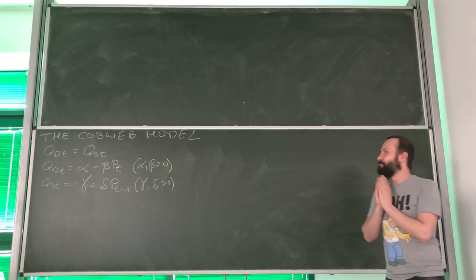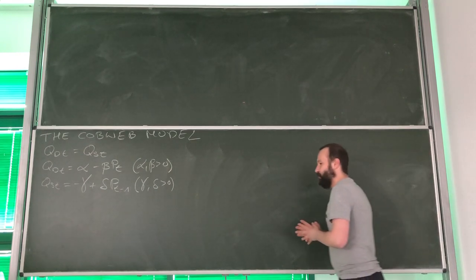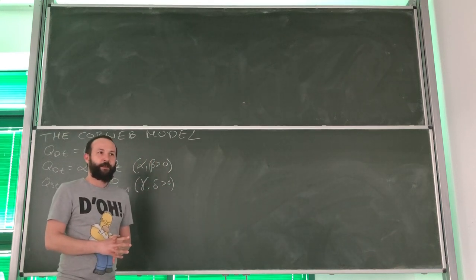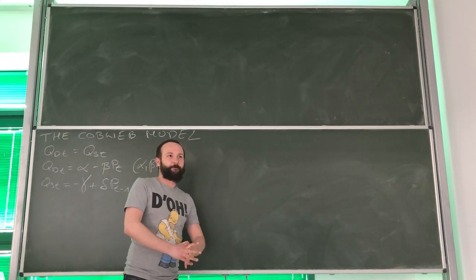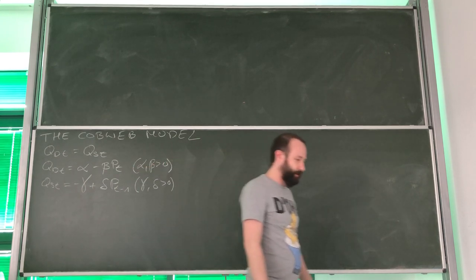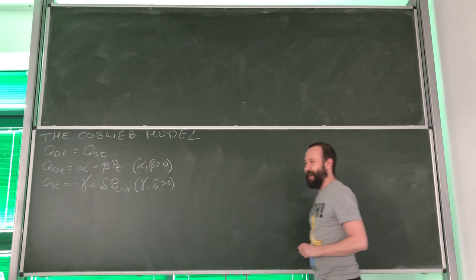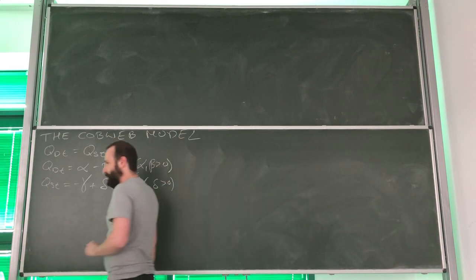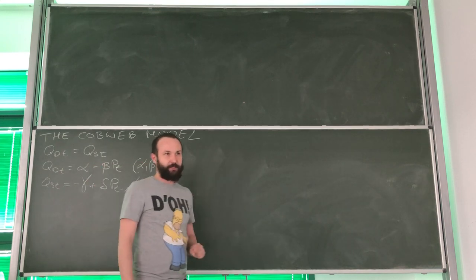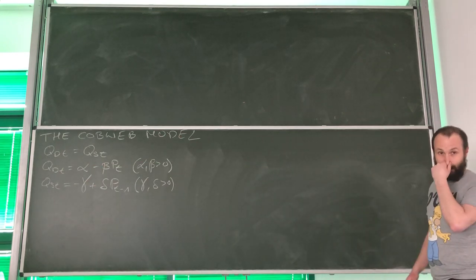The first thing we need to remember is that regardless of what the price on the market is, producers need to sell everything in a given time period. If they don't, all of what they have will go bad and they will have losses. So, in order to maximize profits, they need to sell everything.